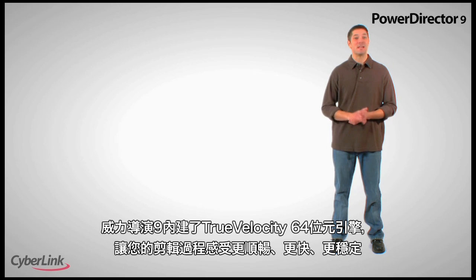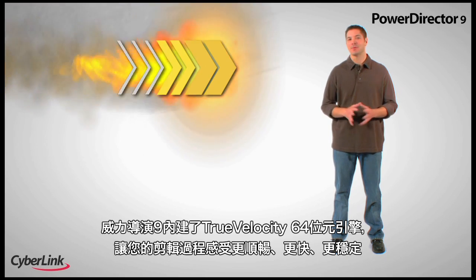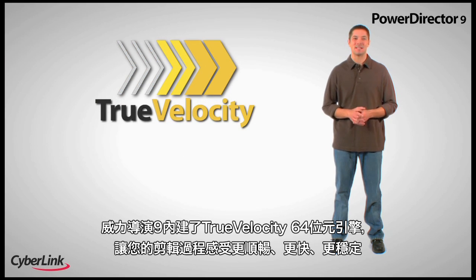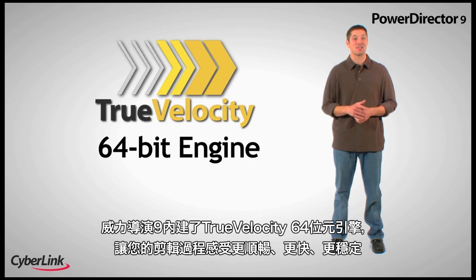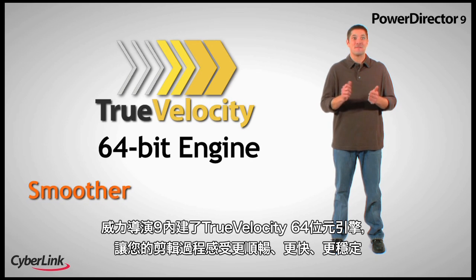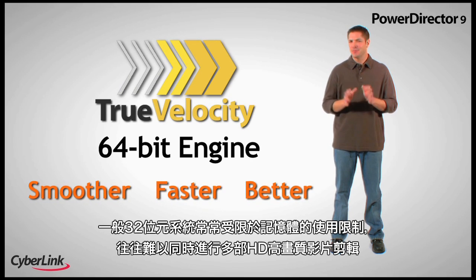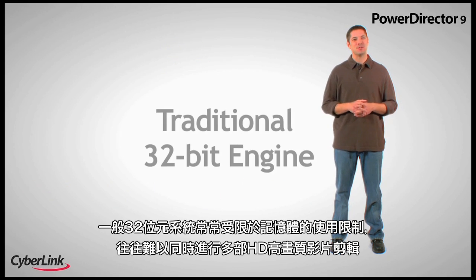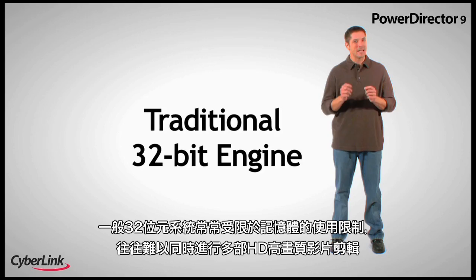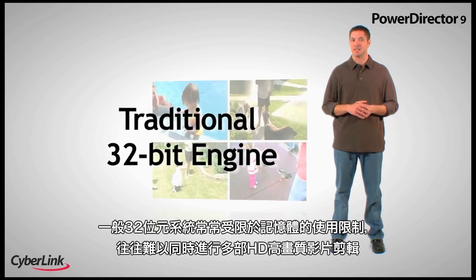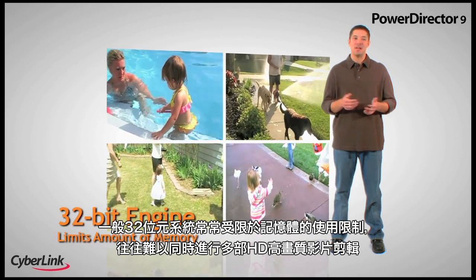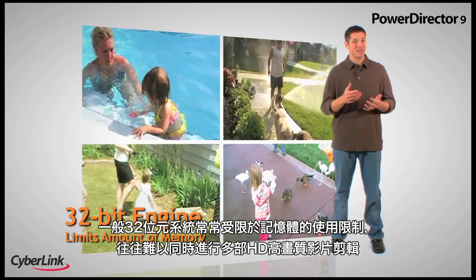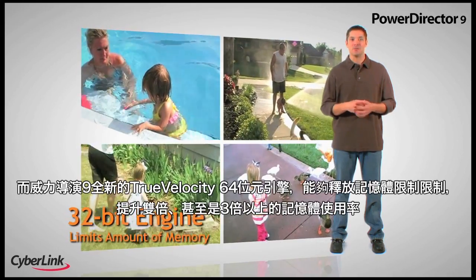PowerDirector 9 includes the all-new CyberLink True Velocity 64-bit engine that will make your whole video editing process smoother, faster, and better. A traditional 32-bit system limits the amount of RAM you can utilize. Because of this, the number of HD video clips you can use is limited.